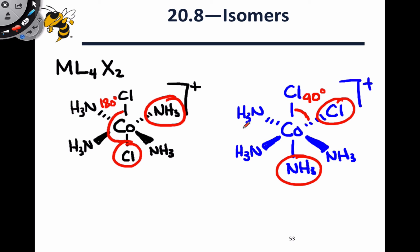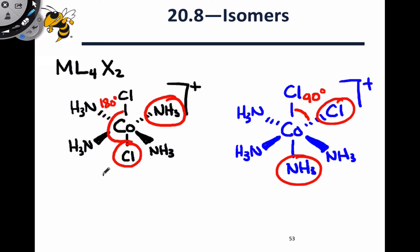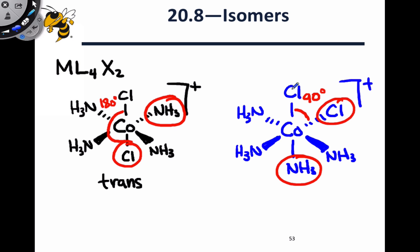Note the correspondence with the square planar example seen before. The black structure on the left is the trans isomer because the two chlorines are across from one another, bisected by the equatorial plane. In the blue case, the chlorines are relatively close to one another — this is the cis isomer.